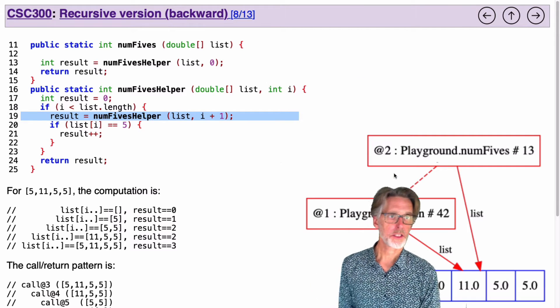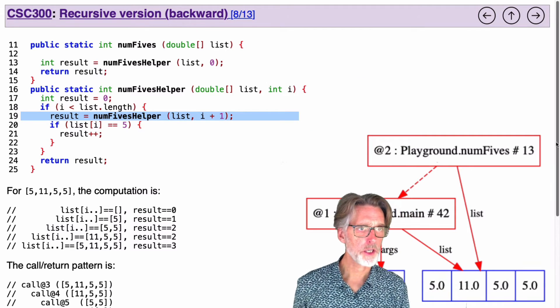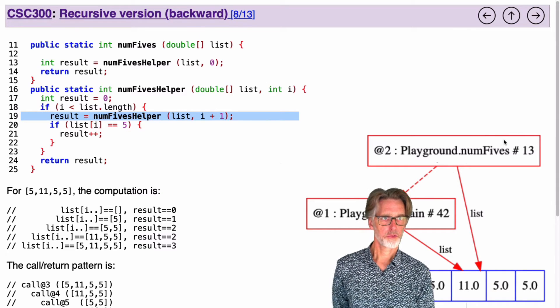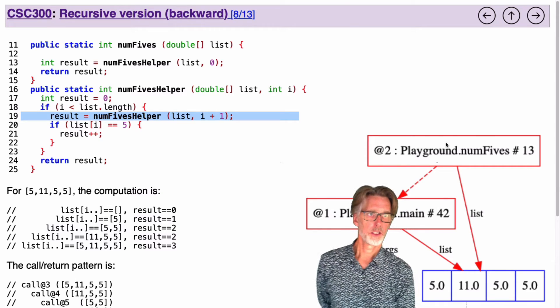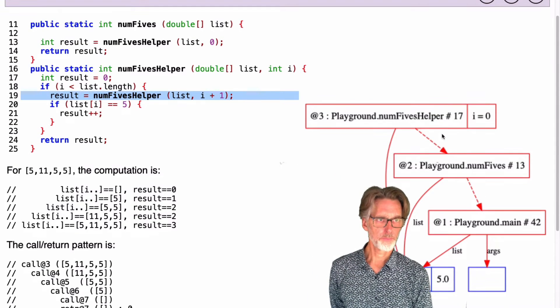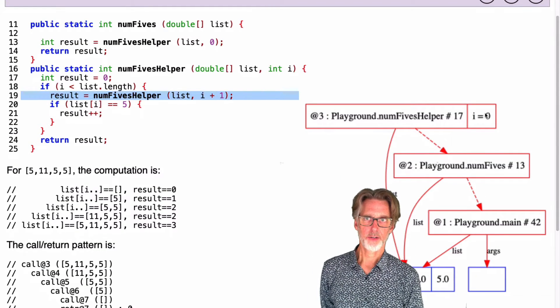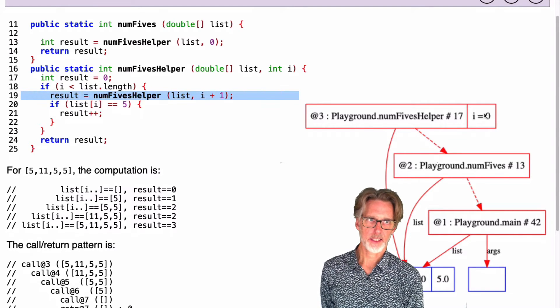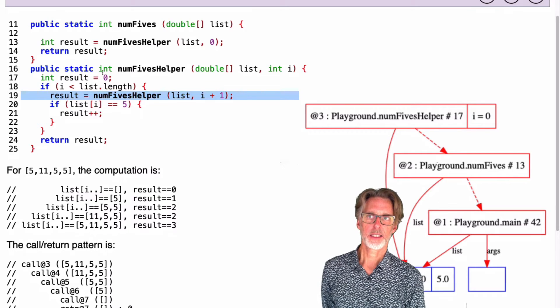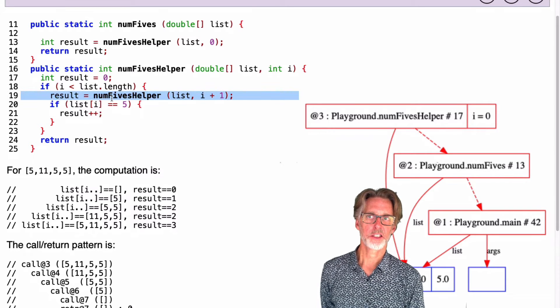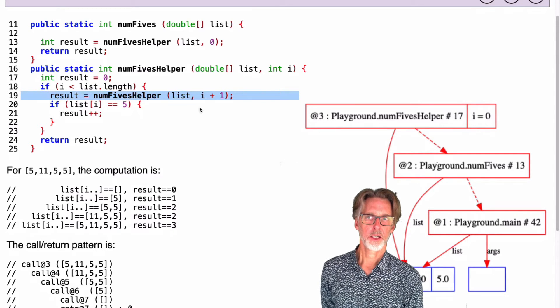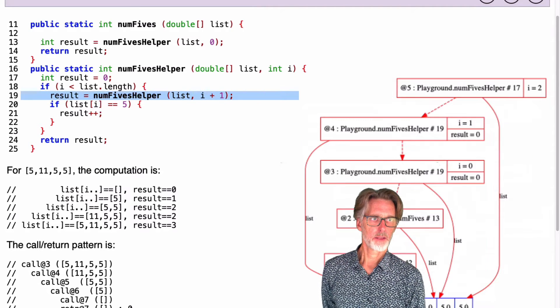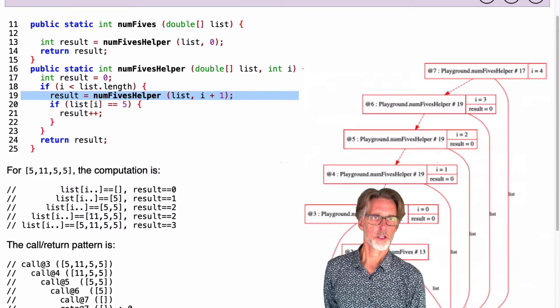So if you look at how this computes, we're going to start off with a recursive call to the num5's helper, which is going to initially, of course, have i as zero. And what we're going to do here is really just a bunch of recursive calls to get to the end of the list. If you look at this, it doesn't really do anything interesting until it starts returning. So we're just going to do one, two, three, you know, up to four recursive calls.